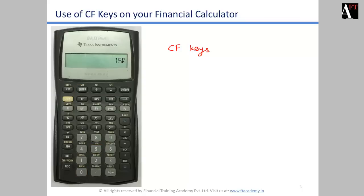Now press the NPV button. It asks you to put in I, that is the interest rate or discount rate. Enter 8, press Enter, then press the down arrow key. It now shows NPV equals 0 because we have yet to compute it. Press the CPT or Compute button and it will give you the NPV of 51. That is how you use the CF keys to calculate NPV on the financial calculator.